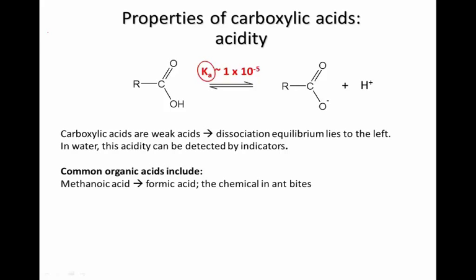There are many common organic acids that you encounter in everyday life. One is methanoic acid, whose old name is formic acid. This is the chemical in ant bites — what ants inject into you and what causes some pain.